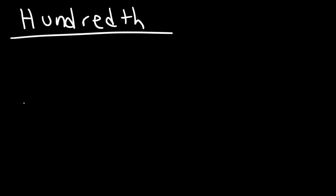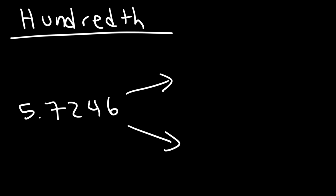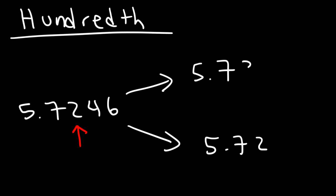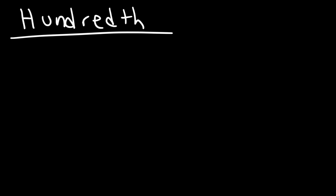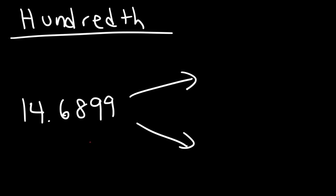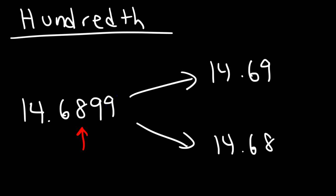Now let's focus on rounding to the nearest hundredths place. So let's say we have 5.7246 — round it to the nearest hundredth. So this is the hundredths place. It's either going to be 5.72 or we round up to 5.73. Looking at the next number, 4 — that's less than 5, so we need to round down to 5.72. Now let's say we have 14.6899. So it's either going to be 14.68 or 14.69. Looking at the next number — it's greater than 5, so it's definitely going to round up to 14.69.